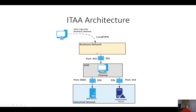Here you can see an architecture diagram that illustrates how InTouch Access Anywhere fits into your network. The user logs into their PC and connects to the business network, either through a local connection or remote VPN connection. At that point, the business network can be connected to the industrial network through the DMZ and two SSL layers, or secure sockets. These may include an optional secure gateway, giving the user access to the InTouch application through an RDS session.